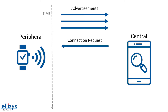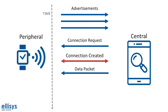The peripheral starts advertising on each of the primary channels with a type of advertisement that tells the discoverer that it can accept a connection. The central discovers one of these advertisements and decides to establish a connection, so it sends back on the same RF channel a connection request packet. At this point, the connection is considered to be created. After a certain period of time called the connection interval, the now-called master sends a data packet to the slave. Once the slave receives this data packet, it sends back another data packet, and at this point the connection is considered established.